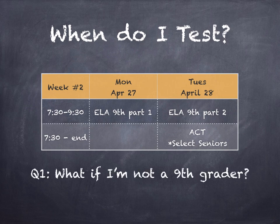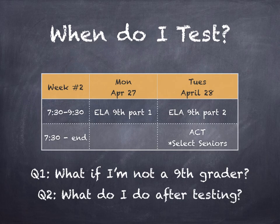So let's look at the first question — what if I'm not a 9th grader? Then you may attend an academic review session or you may sign a permitted absence form. What do I do after testing if I am a 9th grader? You'll choose an academic review session and participate in that session until 11:30 and then leave at the end of the early release school day.